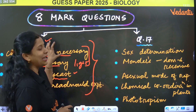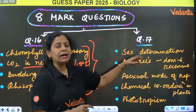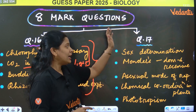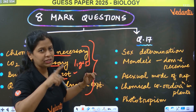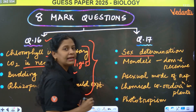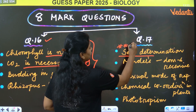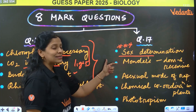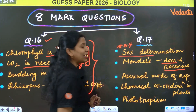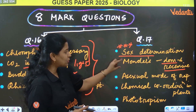In one question — there is an 8-mark question. Both questions will have internal choice. In the next question, you will prepare for sex determination in humans — heredity chapter, a super important question. Then Mendel's dominant and recessive traits — how did he find them? Monohybrid, dihybrid — there will be a question with a little twist.